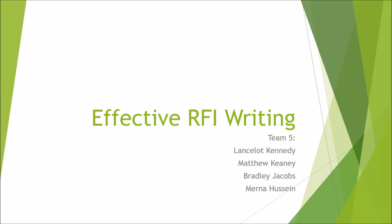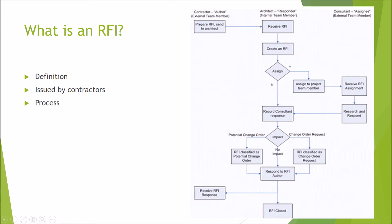This video will cover the basics of RFIs and how to improve your chances of receiving an appropriate response. In most construction documents, it's inevitable that the agreement, drawings, and specifications will not adequately address every single matter. There may be gaps and conflicts, so the goal of the request for information is to act as a partner tool to resolve these gaps and conflicts during the bidding process or early in the construction process, to eliminate the need for costly corrective measures.